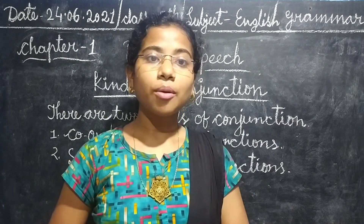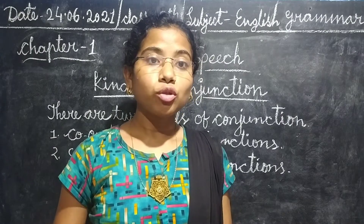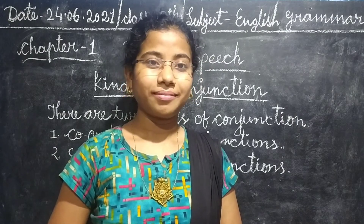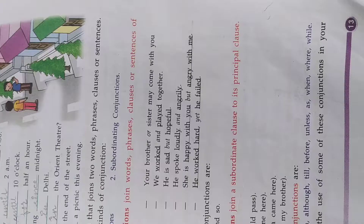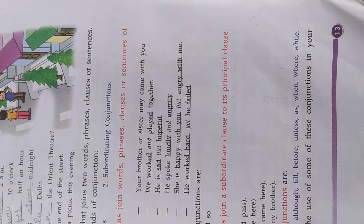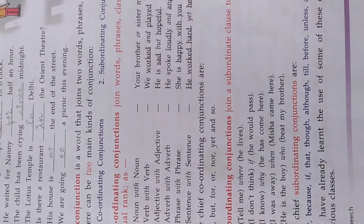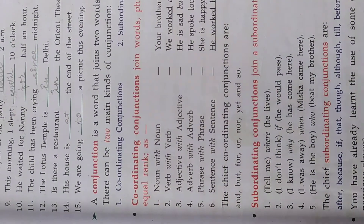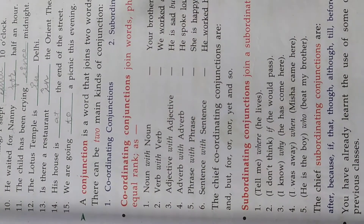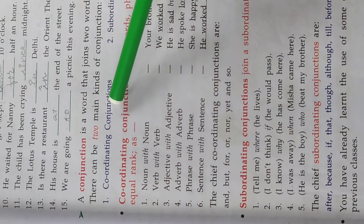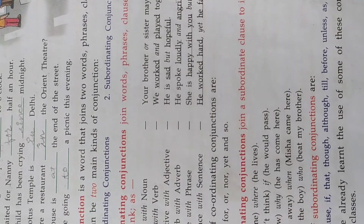Let's open your English grammar book and study about the kinds of conjunctions in detail. Open page number 13. There are two types of conjunctions given: number 1, co-ordinating conjunctions, and number 2, sub-ordinating conjunctions.